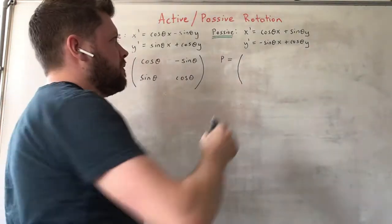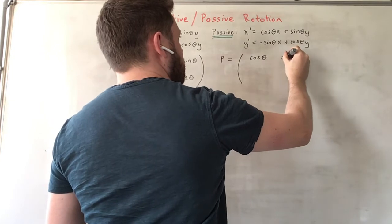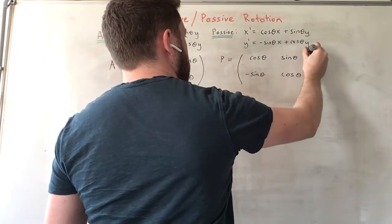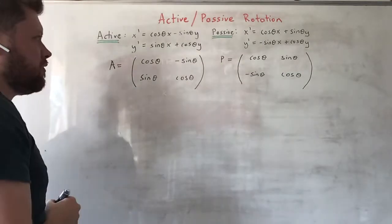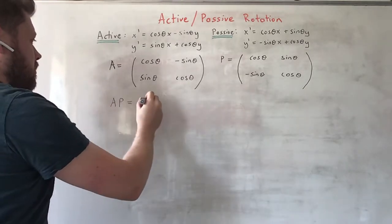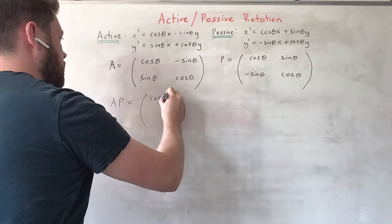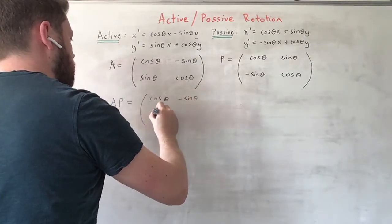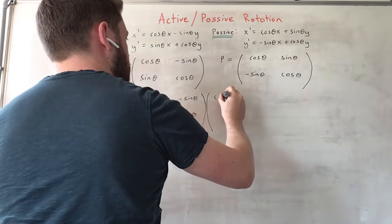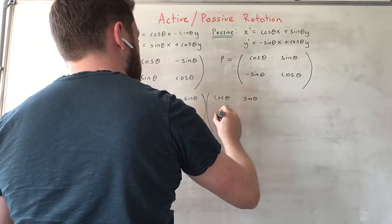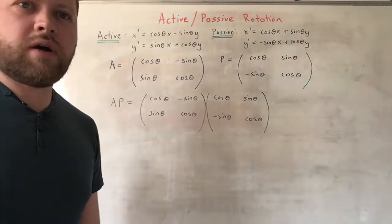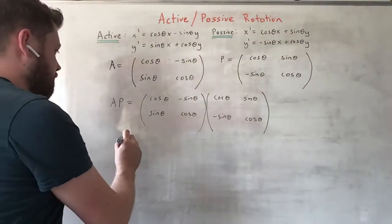The passive transformation matrix P is: cosine θ, sine θ, minus sine θ, cosine θ. Now I'm going to ask the question: what happens when we combine A and P together — when we multiply the two matrices together? We have cosine θ, minus sine θ, sine θ, cosine θ times cosine θ, sine θ, minus sine θ, cosine θ — those are our two matrices that we're going to multiply together.